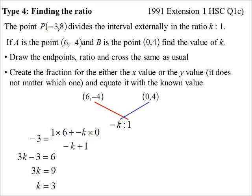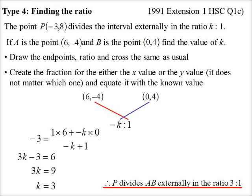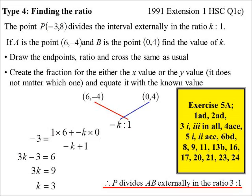And I end up getting my value for k. So, there it is. k is three. So, I now know that p divides ab externally in the ratio three to one. Alrighty. So, 5a. There's a few questions there on midpoint and distance and what have you, but I suppose it's the division of the interval is what we're probably more interested in at this stage.